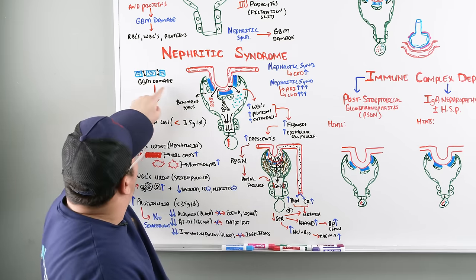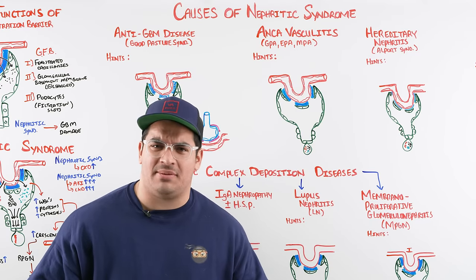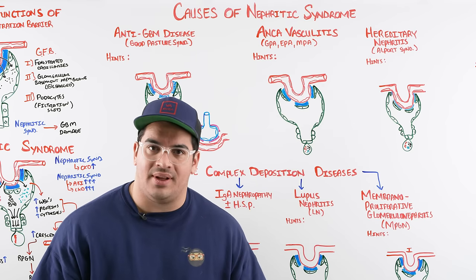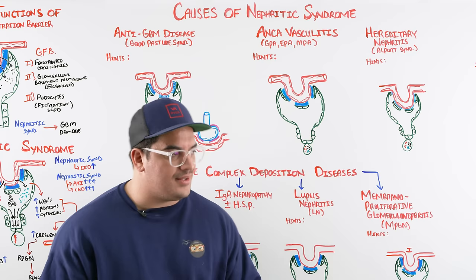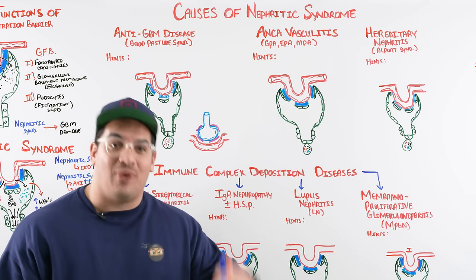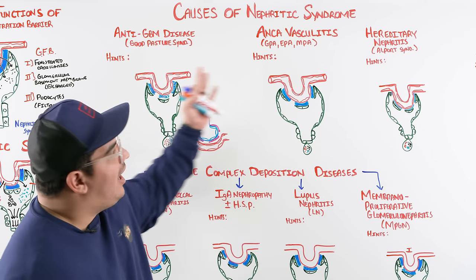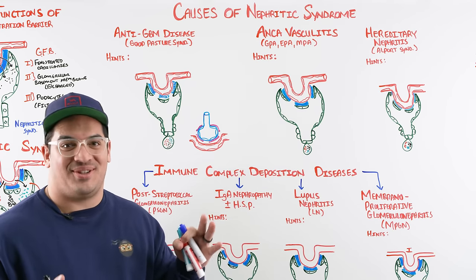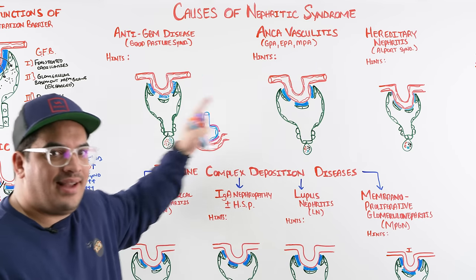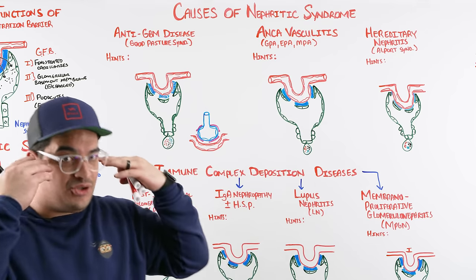Now let's talk about the cause of GBM damage. We need to figure out why there is GBM damage — why are red blood cells, white blood cells, and sub-nephrotic range protein being lost, and why are these patients at such high risk of rapidly progressive glomerulonephritis? There are several categories: anti-GBM disease, ANCA vasculitis, hereditary nephritis, and immune complex deposition.